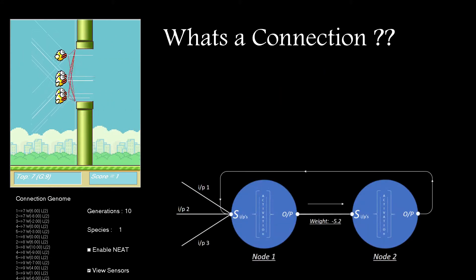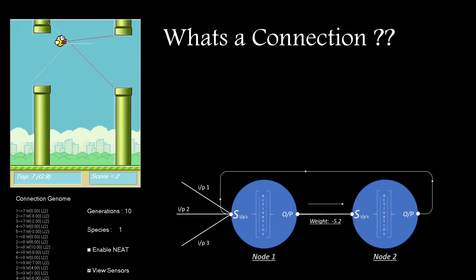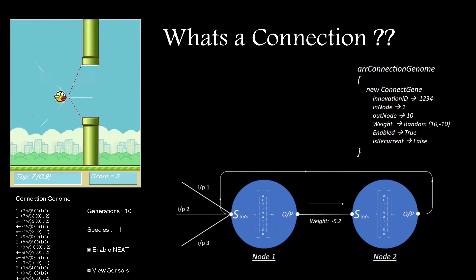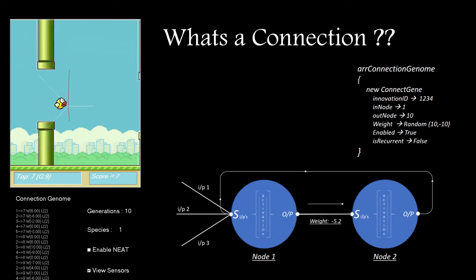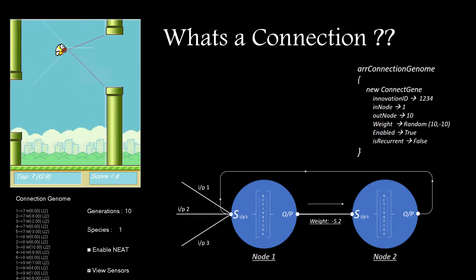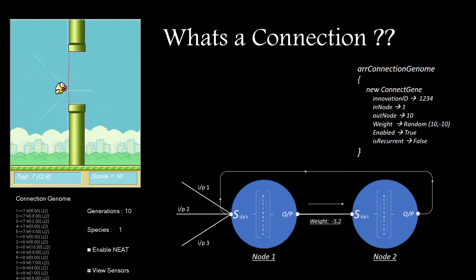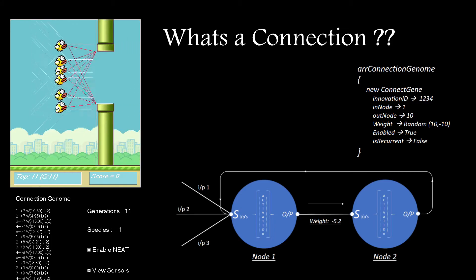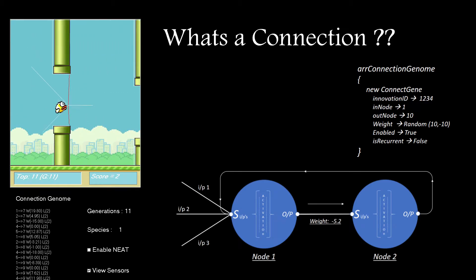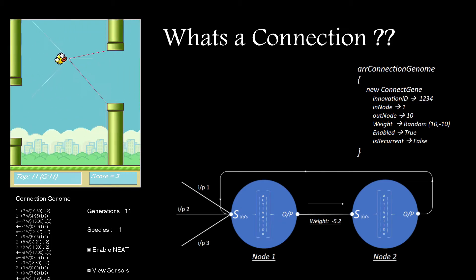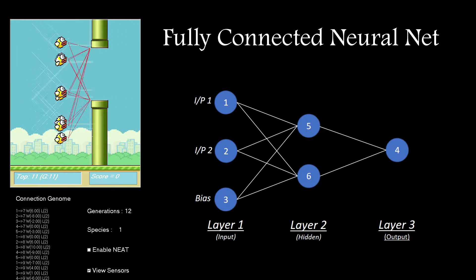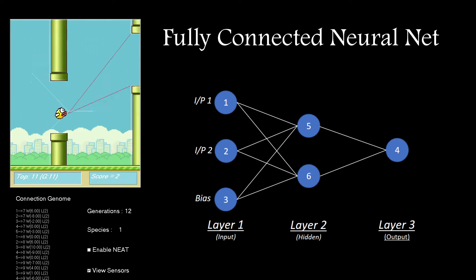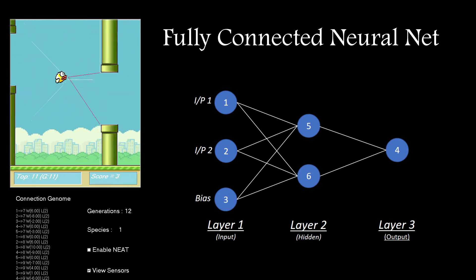Next up are the connections. Here we can see two nodes linked by a connection. It has a weight, minus 5.2. I need some extra information about the connections: there's an innovation ID, which is a unique number for each connection linkage, the in and out nodes showing where the connection came from and where it's going, the weight of the connection, whether it's enabled or not, and whether or not it's a recurrent connection. Setting up a loop to populate the arrays, when you plot it on screen you get a nice, fully connected neural net.